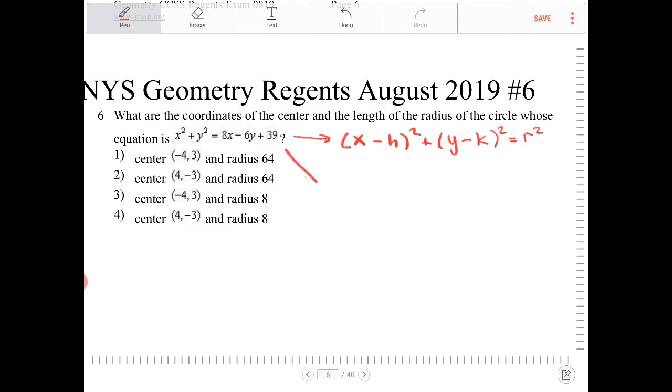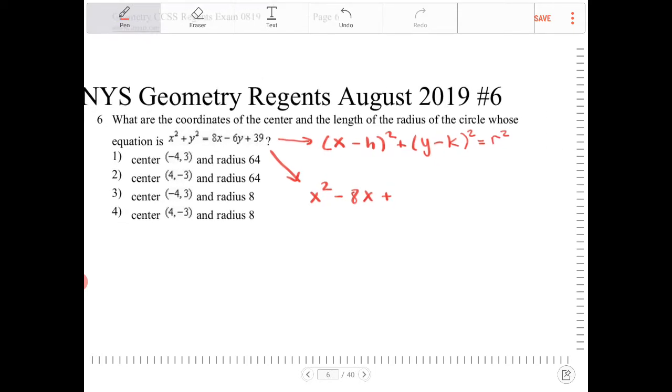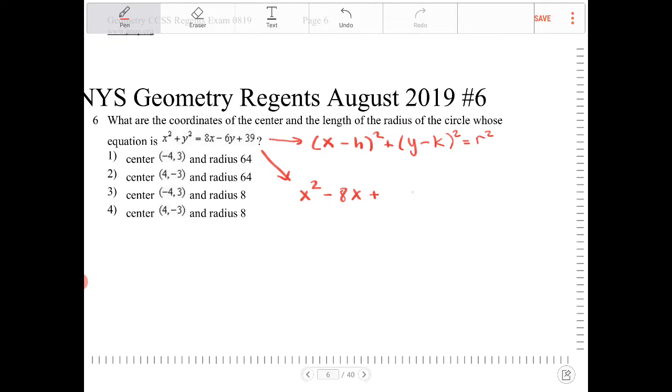So I'm going to subtract over 8x and add 6y and I'm going to leave 39 on the right-hand side. So I'll end up with x squared minus 8x plus, I'm going to give myself a little space, and then plus, because I'm going to be adding something over here.